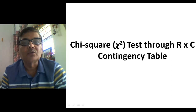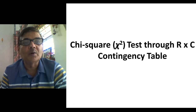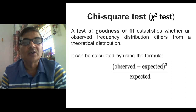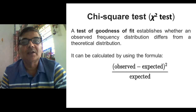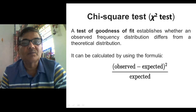We use the chi-square test to find out whether a significant difference exists between observation and expectation. This test can be performed by applying different methods. This chi-square analysis is a kind of non-parametric test — it is a test of goodness of fit that establishes whether an observed frequency distribution differs from a theoretical distribution.